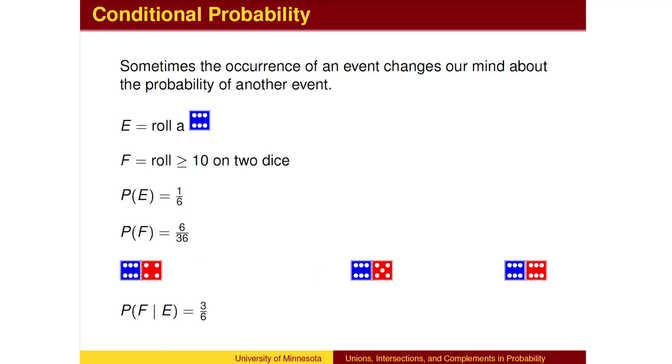We call this conditional probability. What is the probability of F conditioned on the fact that event E happened? In this case, the probability of event F getting a total of 10 now becomes a question of what happens on the second die. We already have 6, we just need 4 more, so 3 of the 6 possibilities are good. The probability of F, given that E happened, is 3 sixths, much better than the original 6 out of 36.